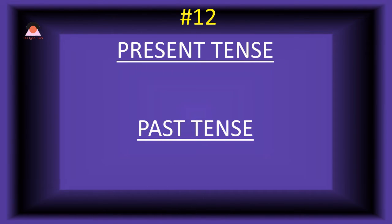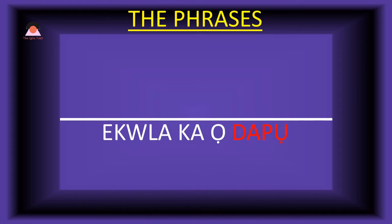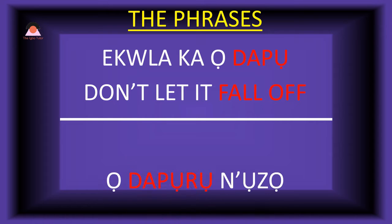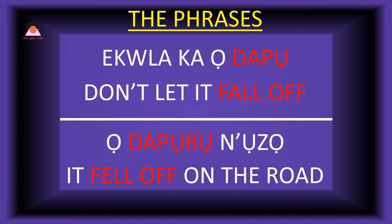Word number twelve: 'dapo,' meaning 'fall off.' The past tense is 'daporo,' meaning 'fell off.' Present tense phrase: 'ekwela ka o dapo' — don't let it fall off. Past tense: 'o-daporo-no-zo' — it fell off on the road.